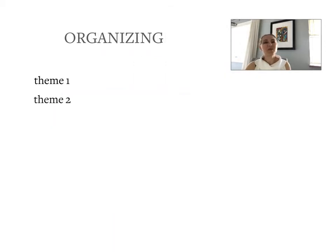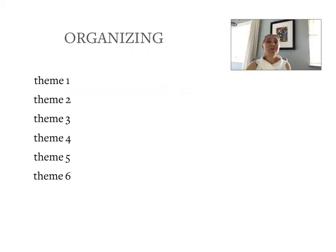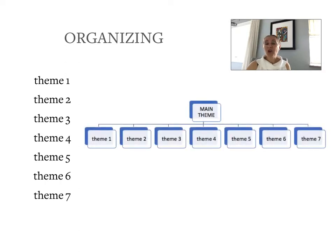Key themes will have emerged in the previous activity. These are the main ideas or main concepts to be understood and conveyed. Use a flowchart or another type of organizer to experiment with various ways that these themes might be arranged. For example, are the themes part of something larger, and if so, what might that main theme be?